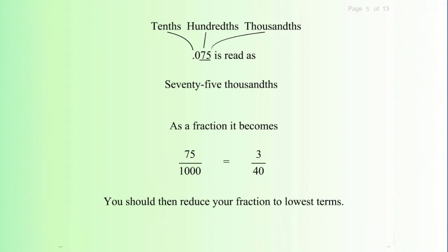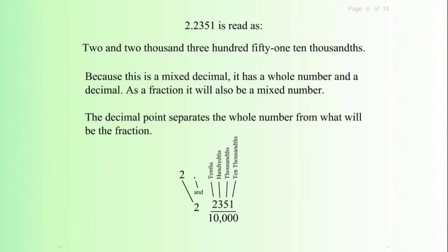So seventy-five over one thousand equals three over forty. Two point two three five one (2.2351) is read as two and two thousand three hundred fifty-one ten-thousandths.